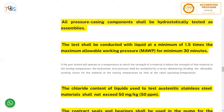If the pump will operate at a temperature at which the material strength is lower than at the testing temperature, the hydrostatic test pressure shall be multiplied by a factor obtained by dividing the allowable working stress at the test temperature by the allowable stress at the rated operating temperature. For example, testing at 50°F while the pump operates at 200°F: since material strength is lower at 200°F, the test pressure is increased pro-rata by the stress ratio. The chloride content during hydrostatic testing of stainless steel shall not exceed 50 ppm.